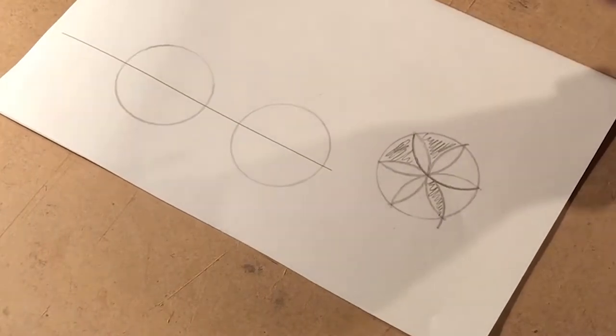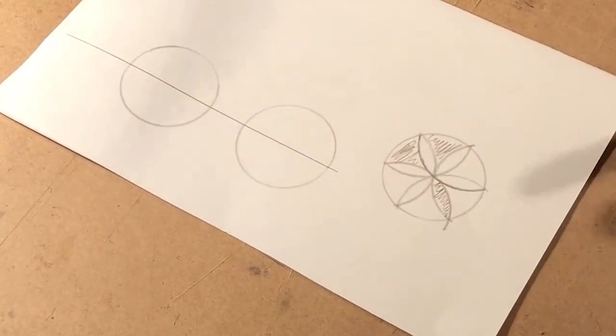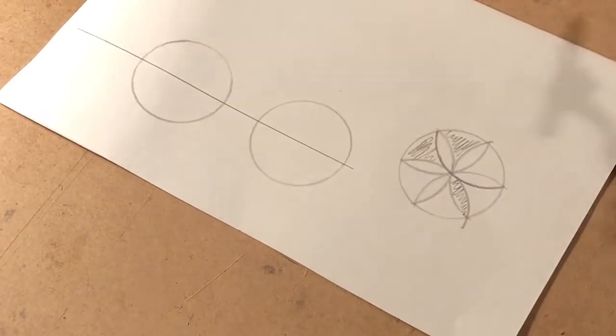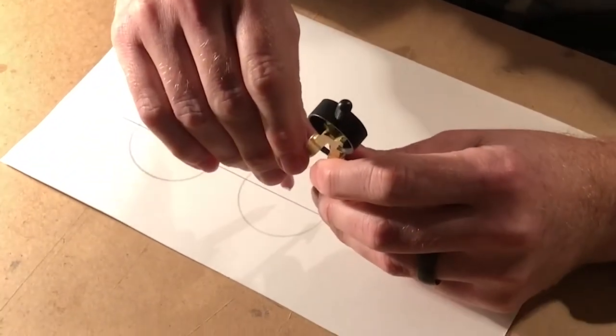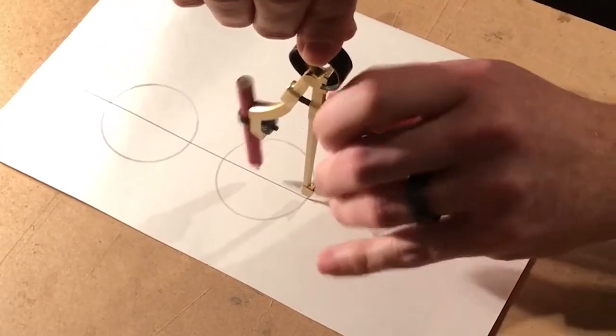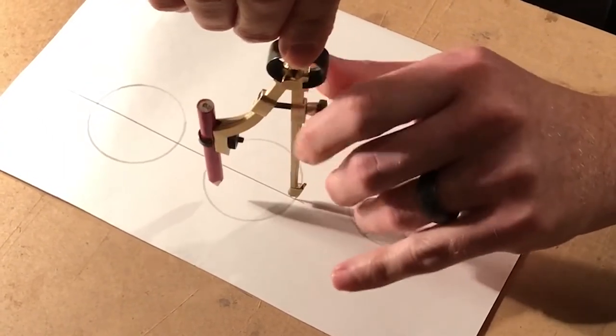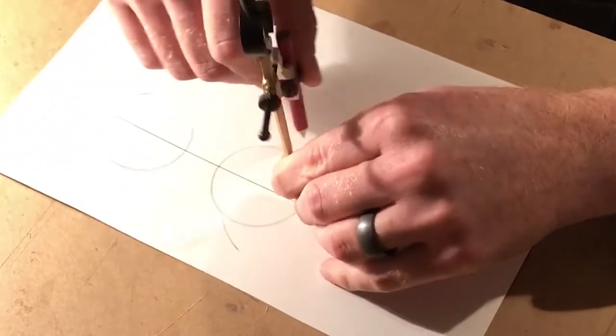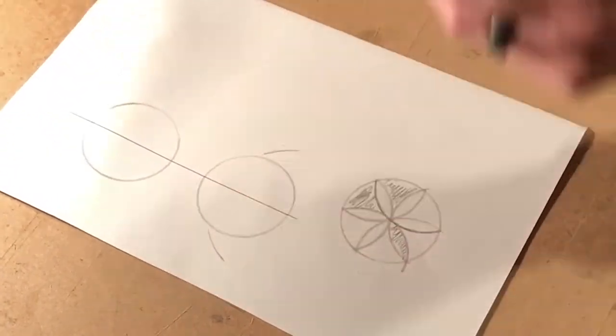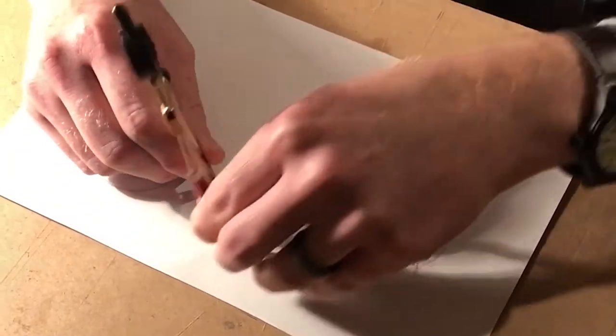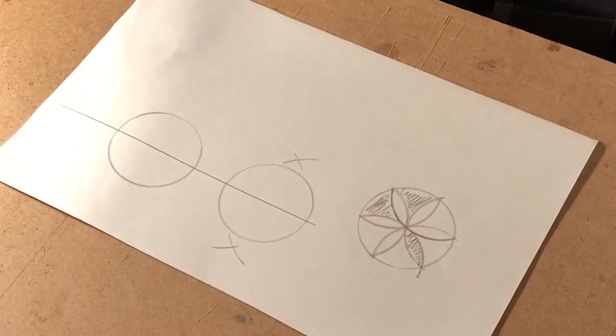Right there you've got pretty much a two-point rosette—there's one point, two points, divided in half. We want to divide it in four. You do that by putting your anchor point on one of those points, making the opening really big, bigger than you need, and making an arc outside the circle above and below. Go to the other point and do the same thing.